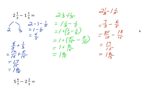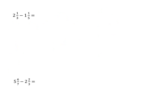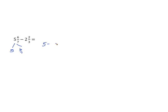Let's do another example with some bigger numbers. Again, the first technique: take from the whole. We decompose our minuend. Now we're going to subtract from the whole, which is five minus two — decomposing the subtrahend — so we get five minus two minus two-thirds. Five minus two equals three, minus two-thirds. Three minus two-thirds is two and one-third.